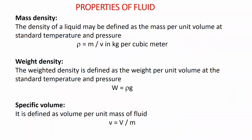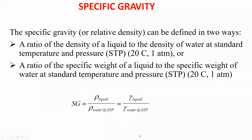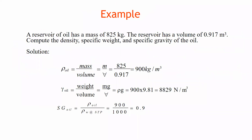Alternatively, specific gravity can be defined as the ratio of specific weight of the liquid to the specific weight of water at standard temperature and pressure — volume cancels out in both cases. Each fluid has its own specific gravity value. For example, for a reservoir of oil with a mass of 825 kg and a volume of 0.917 m³, the density computes to about 900 kg/m³.